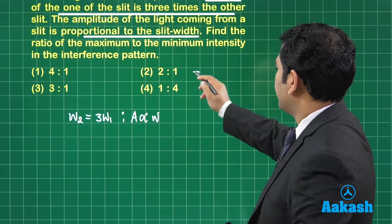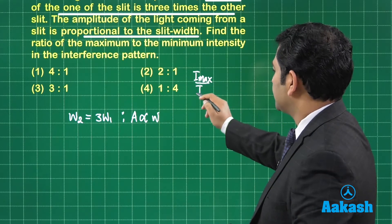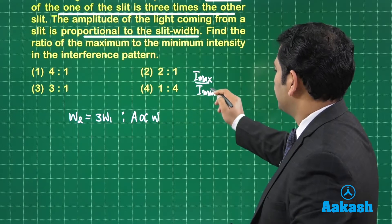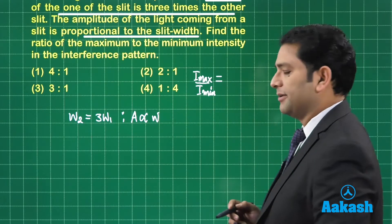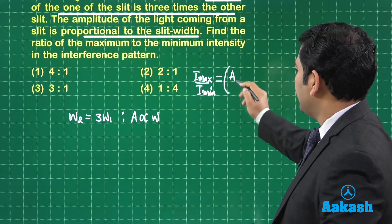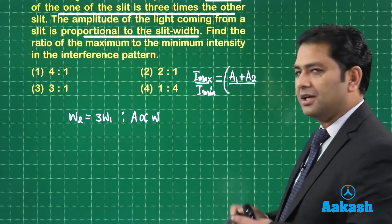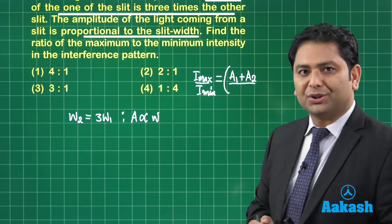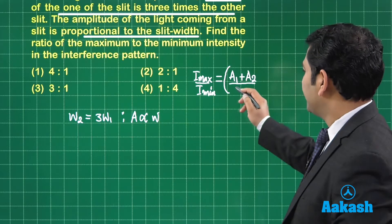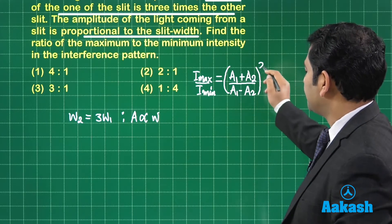Now you know that I max by I min which is the ratio of maximum to minimum intensity. For that we know the expression comes out to be A1 plus A2 where A1 and A2 are the respective amplitudes and then denominator is A1 minus A2 whole square.